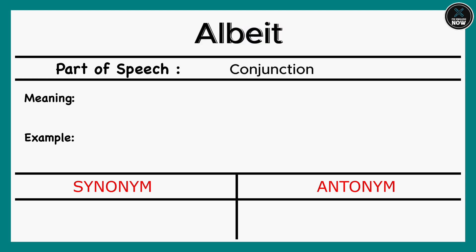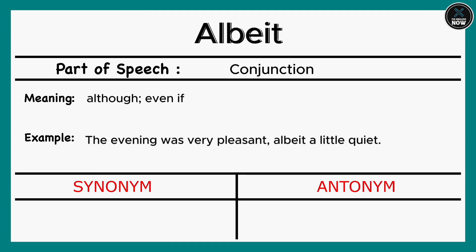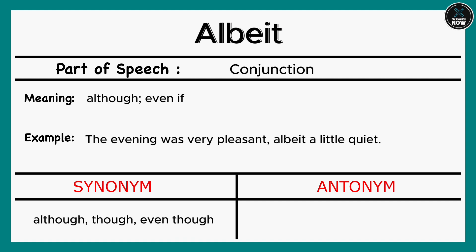Albeit: Although, even if. Example: The evening was very pleasant, albeit a little quiet. Synonyms: Although, Though, Even though. Antonyms: So, Do too, According to.